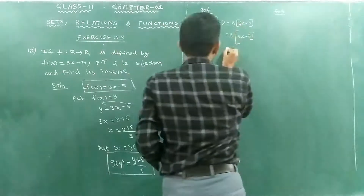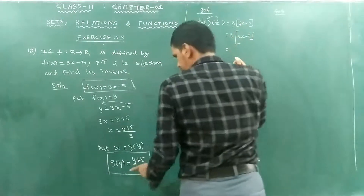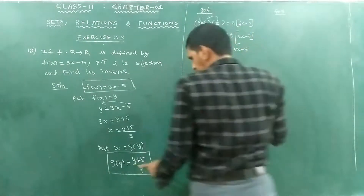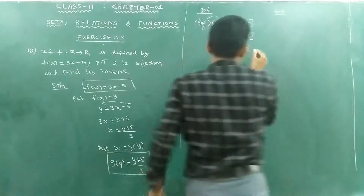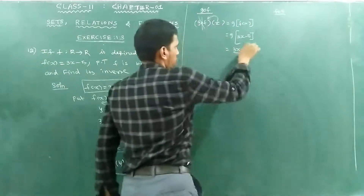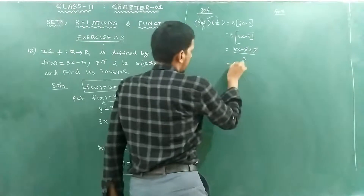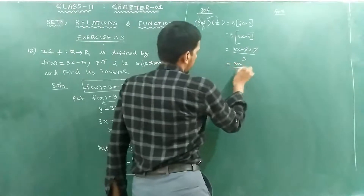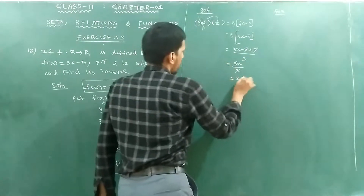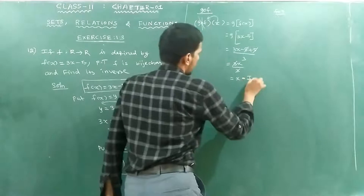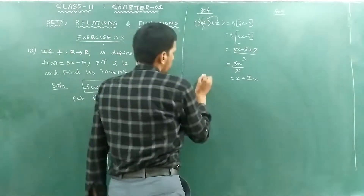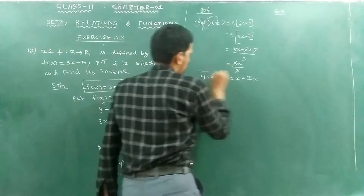So that gives 3x minus 5 plus 5 divided by 3. The plus 5 and minus 5 cancel, leaving 3x divided by 3. The 3's cancel, giving x. So g of f of x equals x.